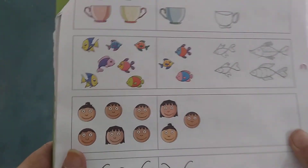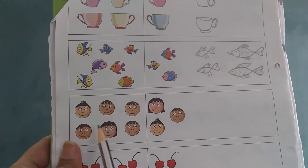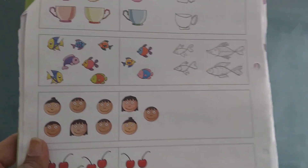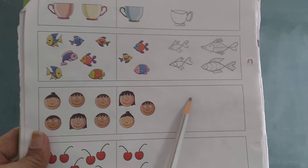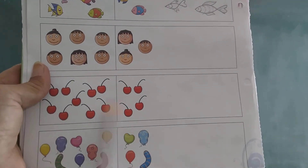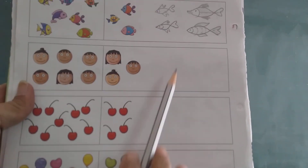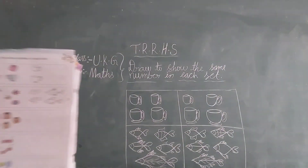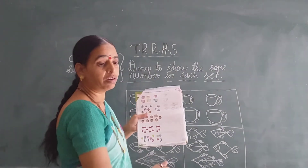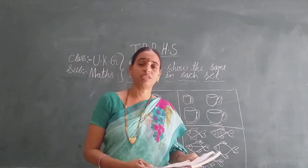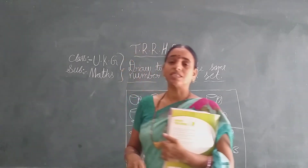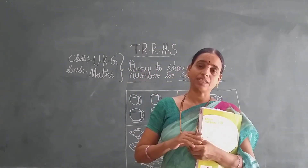Now like that, you have to do here also — to set the same, draw some pictures. And here you have to do your balloons too. This you have to complete in your workbook, children. Those who have books, do this in your worksheets, and those who have no books, do this in your rough notes. This is our today's class children. I will meet you in the next class. Bye.